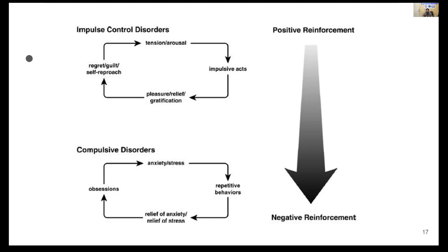Substance use starts with more impulsive behavior and then shifts to compulsive behavior over time. In impulse control disorders, there is tension and arousal before the impulsive act; once the act is done, there is pleasure, relief, and gratification; subsequently the person may feel regret, guilt, or self-reproach. In compulsive disorders, there is anxiety and stress, and to reduce this, the person engages in repetitive behavior that brings relief, followed by obsession formation.